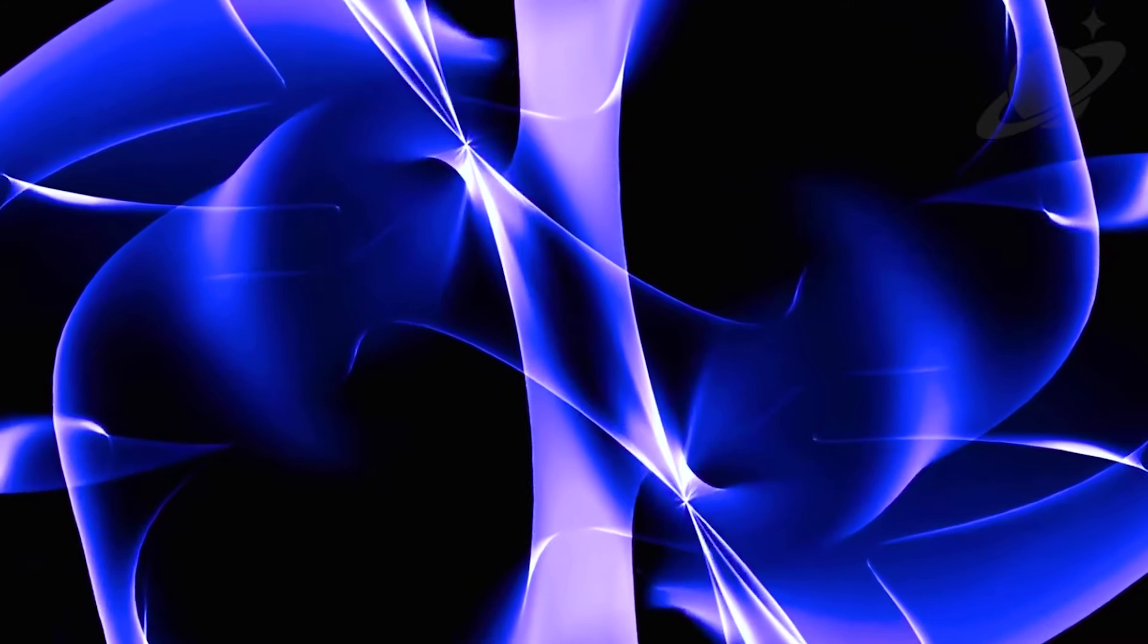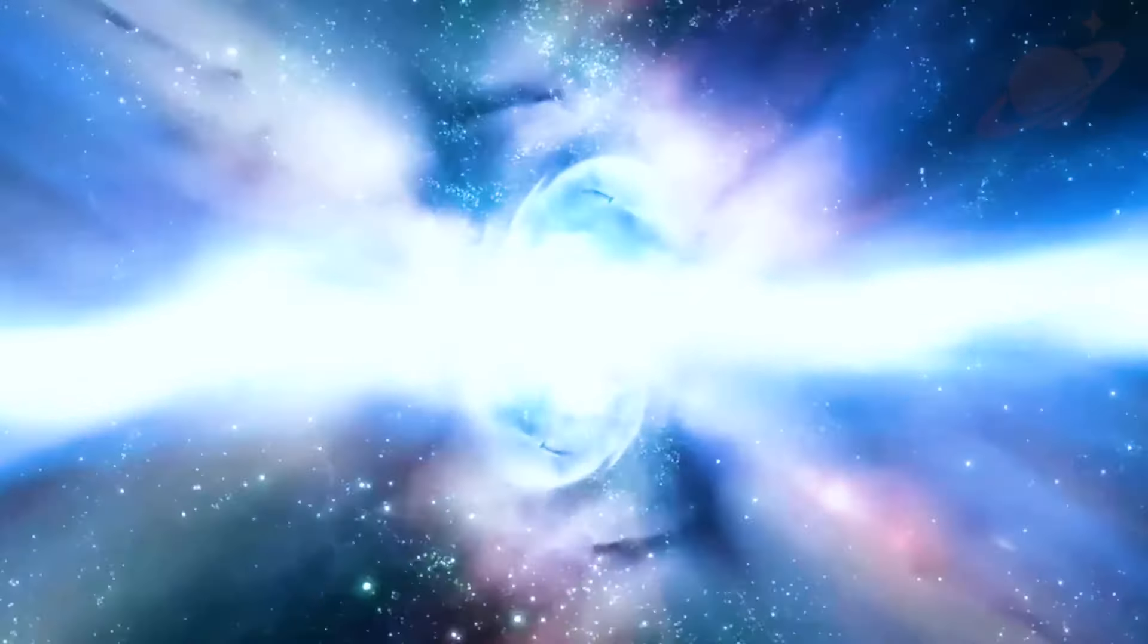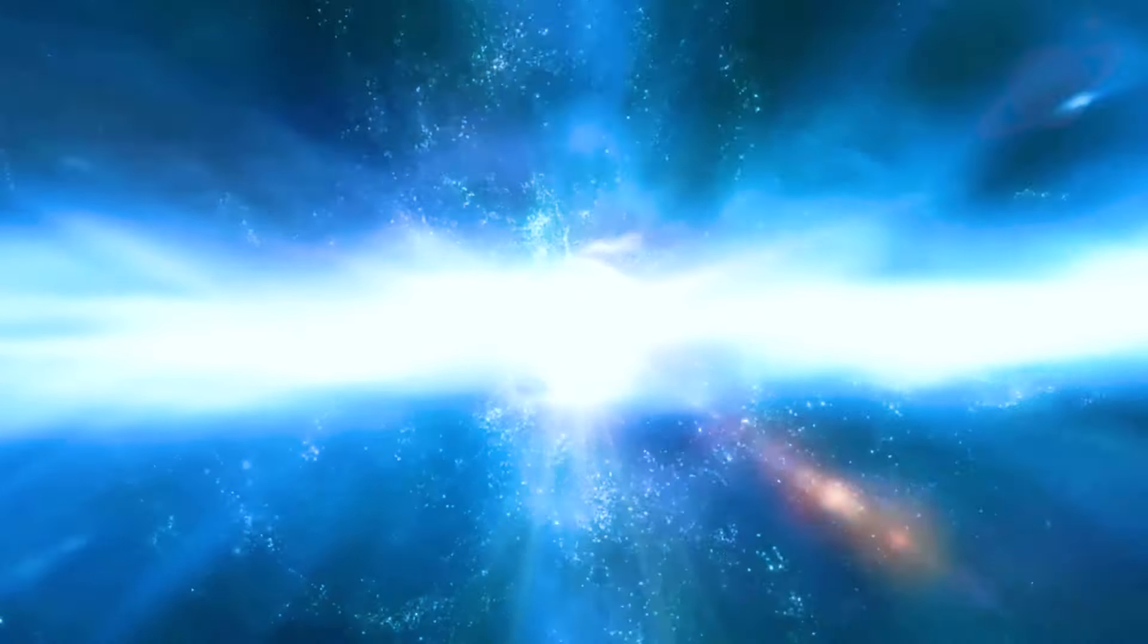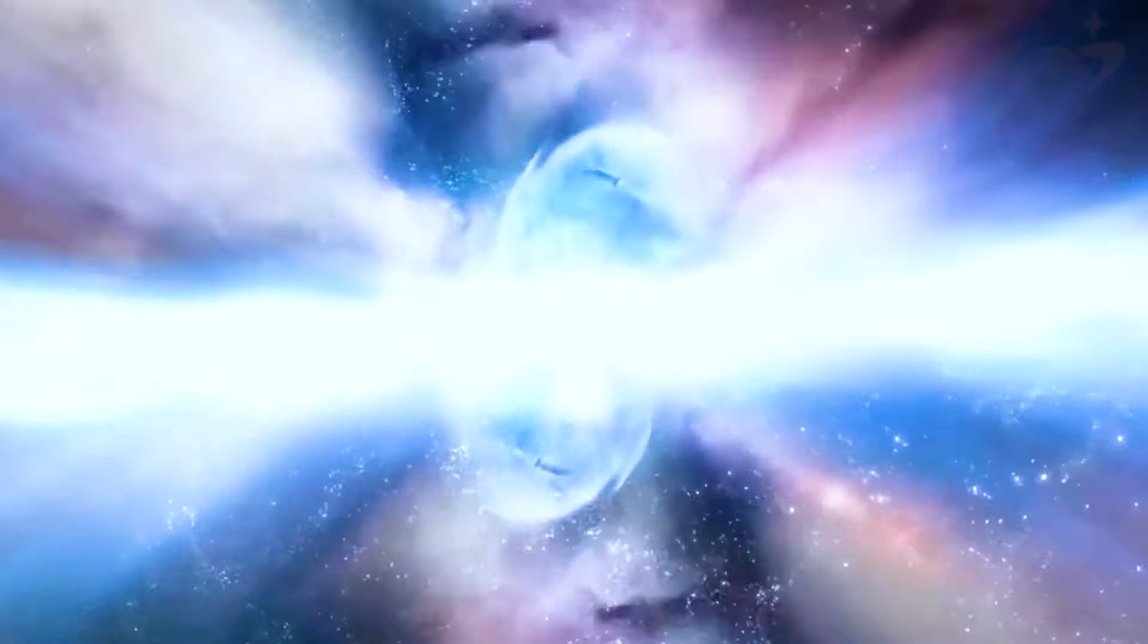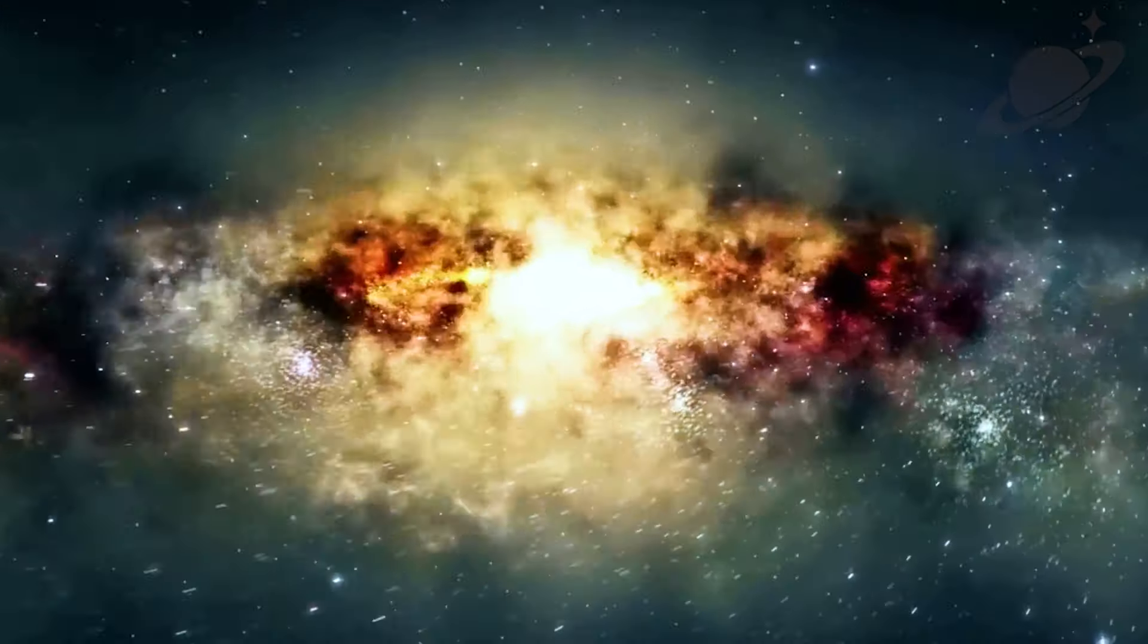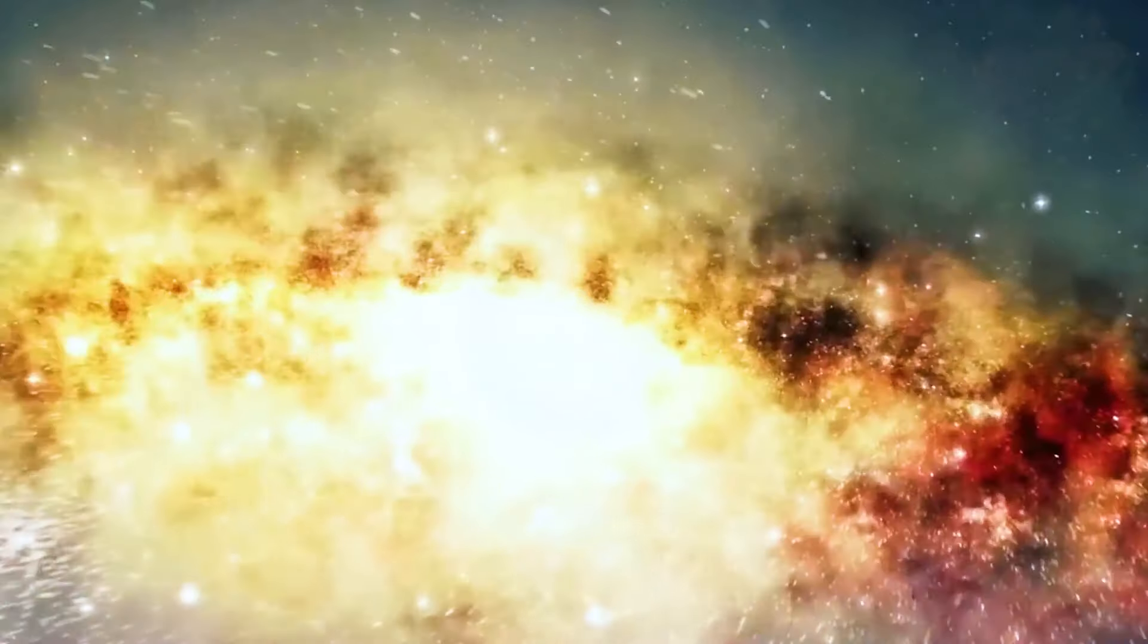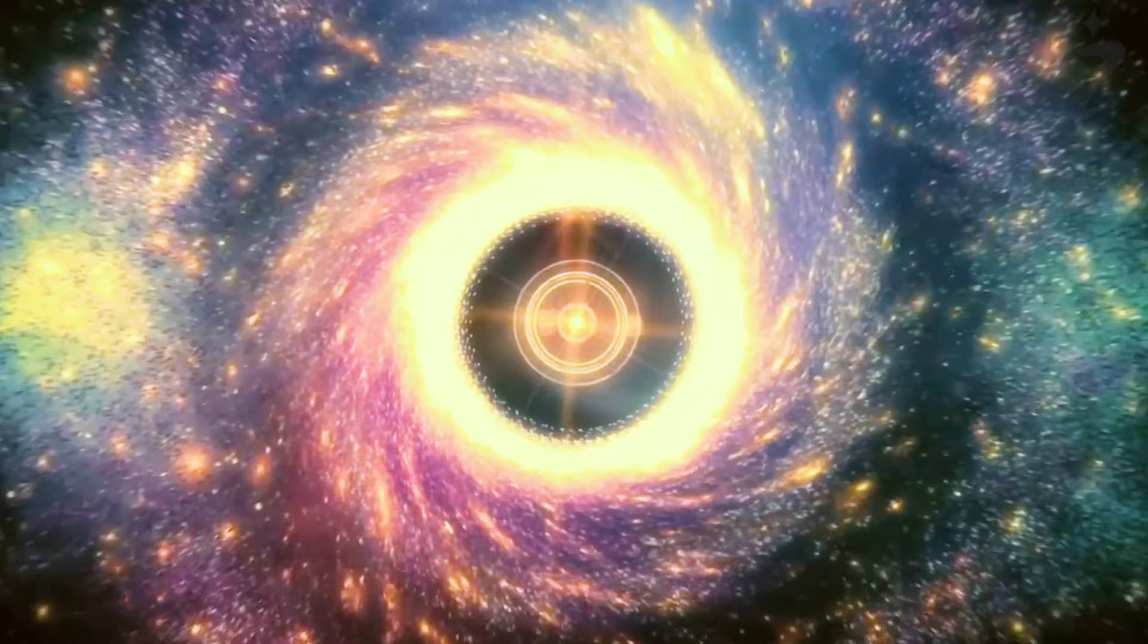Everything we can see, whether it's the things in a room or the distant galaxies we observe with powerful telescopes, is part of what we call the observable universe. Right now, scientists estimate that the observable universe stretches about 46.5 billion light years away. But here's the puzzling part. The universe itself is only 13.8 billion years old. How does that make sense?